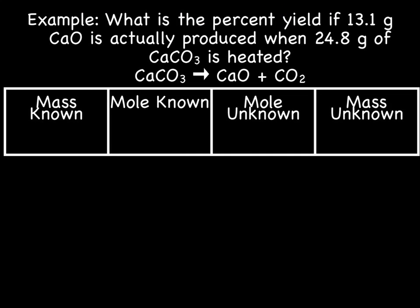Let's try this. What is the percent yield if 13.1 grams CaO is actually produced, when 24.8 grams of CaCO3 is heated? So we need to first figure out the theoretical yield.